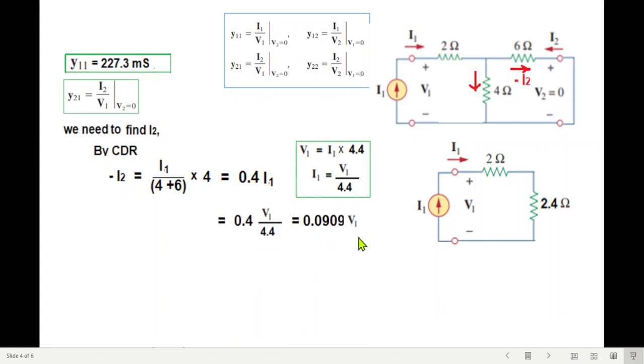So this is our result: negative 0.909 v1, and we can write that i2 equals negative 0.909 v1. From here, we can find i2 over v1, which can be written as millisiemens. This is our y21, so y21 will be negative 90.92 millisiemens. So the first two we have solved.